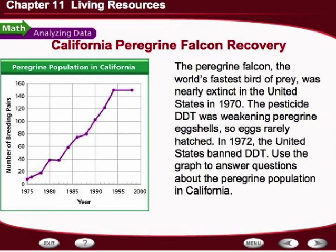An example of one such species is the California peregrine falcon — the world's fastest bird of prey. It was nearly extinct in the U.S. in 1970, as the pesticide DDT was weakening peregrine eggshells so eggs were rarely hatched. In 1972, the United States banned DDT. By looking at this graph, you can plot the peregrine falcon's recovery. In 1975, there were less than 10 mating pairs on Earth. With the elimination of DDT, you can see growth from 1995 up to 2000. The population stabilized at approximately 150 mating pairs — the carrying capacity of the California niche. The peregrine falcon is no longer an endangered species and is considered an environmentalist major success story.